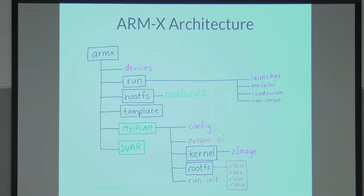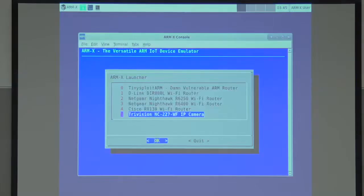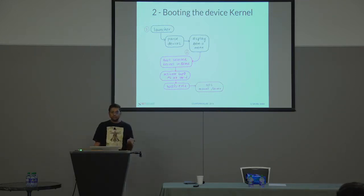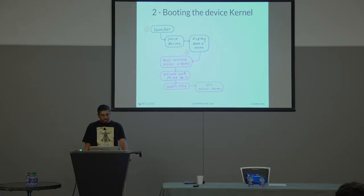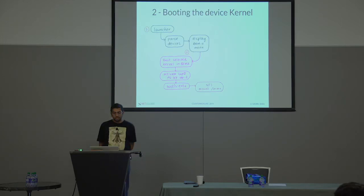First you have a launcher. The launcher parses the device database, gives you a menu, and lets you choose which device to boot. Once selected, it boots the matching kernel inside QEMU. The kernel activates the tap interfaces and loads the host filesystem, then gets ready to launch the userland scripts. The userland scripts are available on the NFS share, which gets automatically mounted under the same directory path. NFS was a big lifesaver — I was really struggling to figure out how to share stuff between the host and QEMU guest.